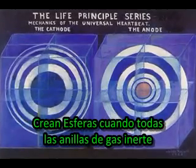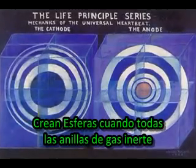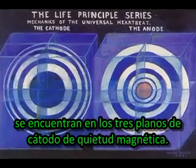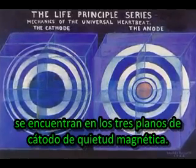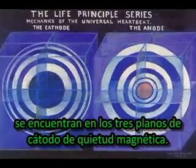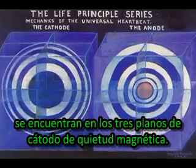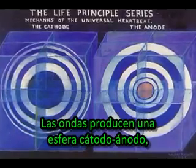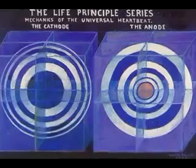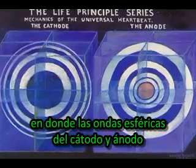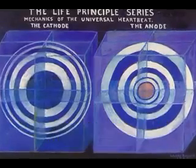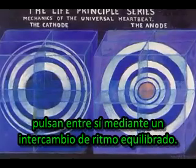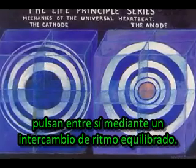They create spheres when all inert gas rings meet on all three cathode planes of magnetic stillness. The waves produce a cathode-anode sphere, where the spherical cathode and anode waves are pulsing through each other via rhythmic balanced interchange.